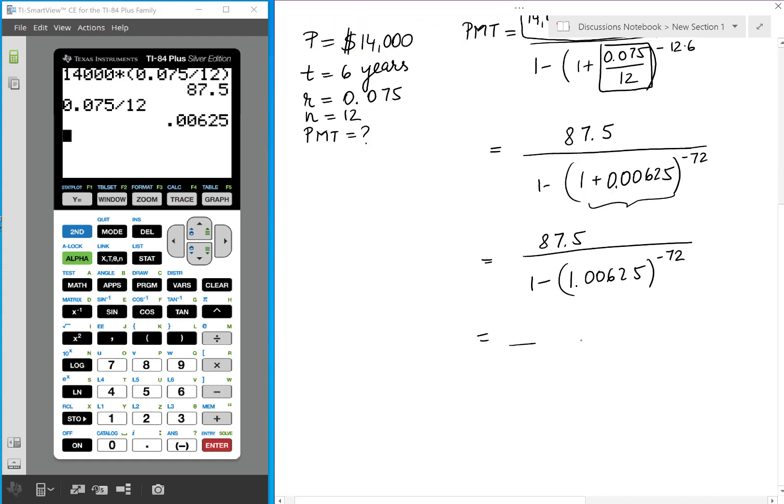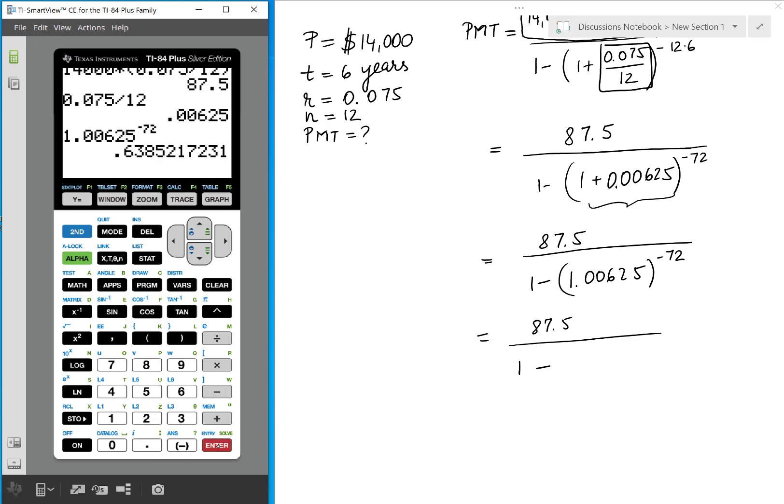So 87.5, 1 minus. And let's calculate what is 1.00625 raised to negative 72. So when we do that we get 0.6385217231. I write all the decimals.